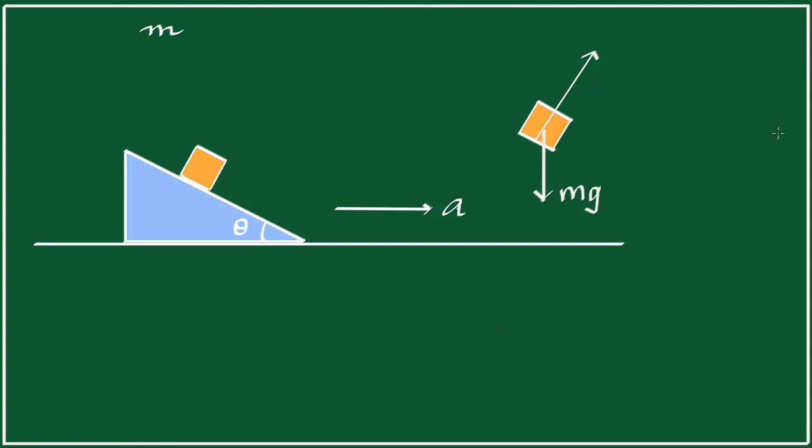Now, let's take our x-axis pointing to the right in the direction of the acceleration. Not along the incline but horizontally. Why? Because it's always wise to take one of the axes to be in the direction of the acceleration. So in our problem, we know that the acceleration is in this direction.